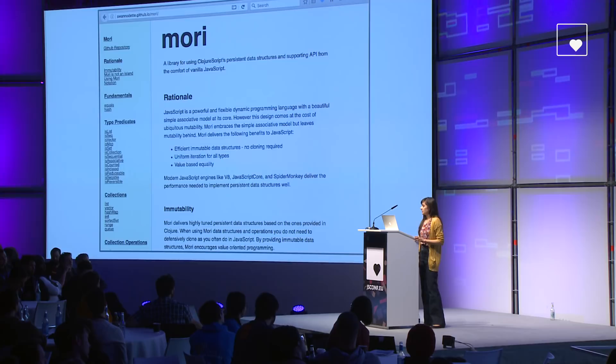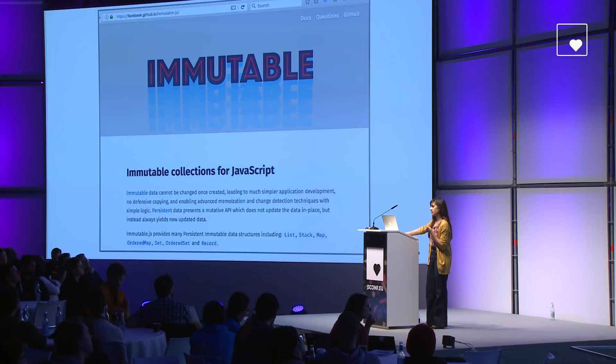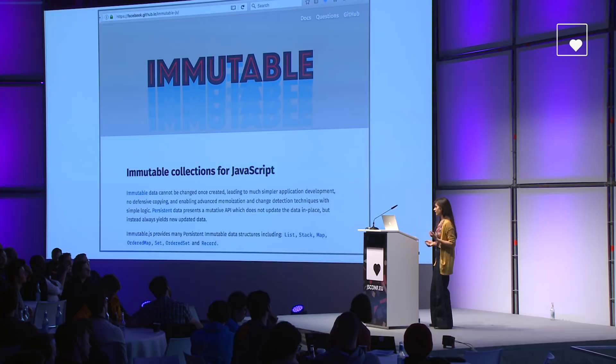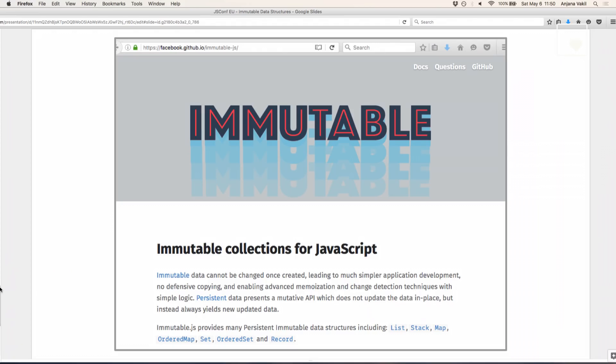On the other hand, there's also ImmutableJS — a library put out by Facebook, created by Lee Byron. This is a JavaScript implementation of these data structures, so it has a more native JavaScript feel without the Clojure background. That means it has a more object-oriented style API, although it still returns new versions of data structures instead of changing mutable structures in place.